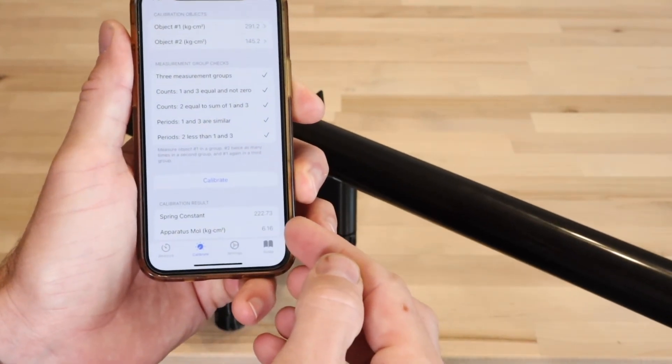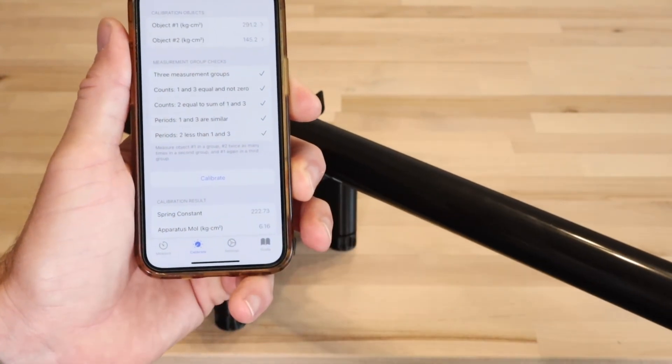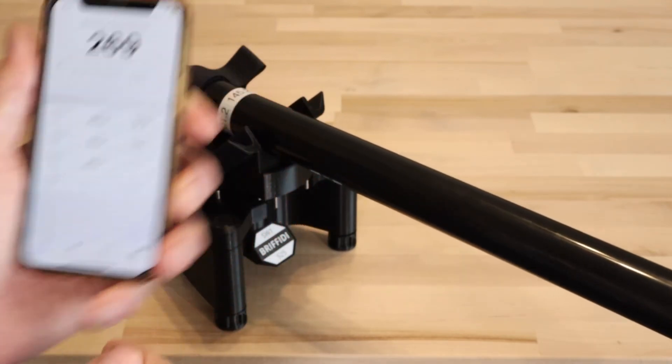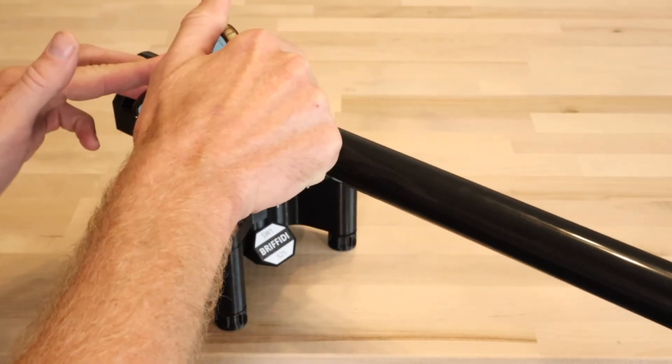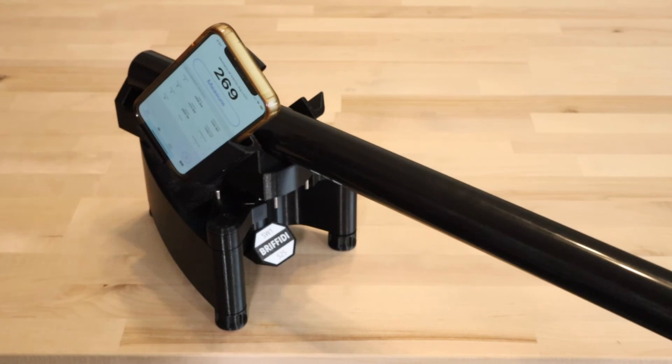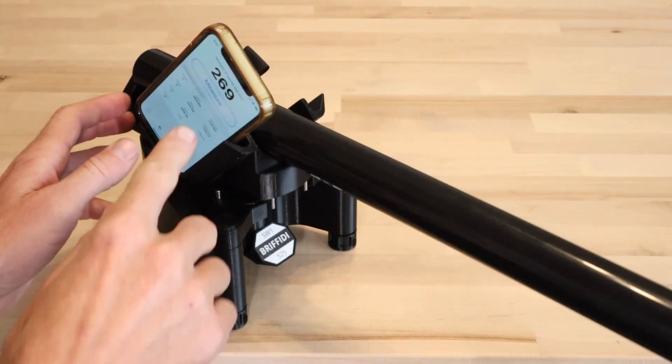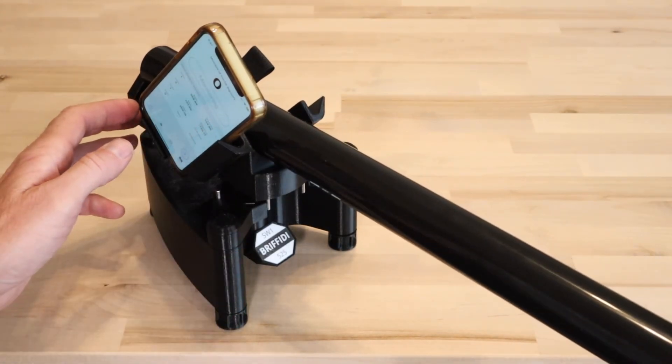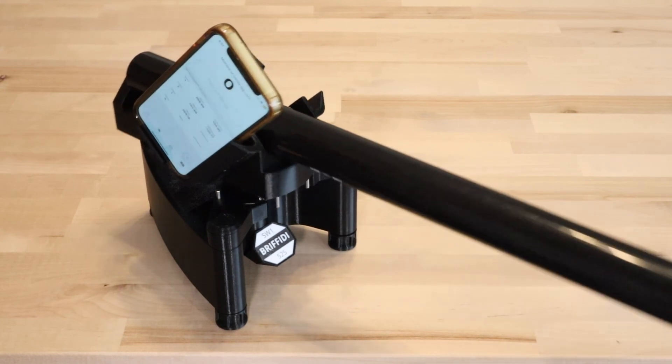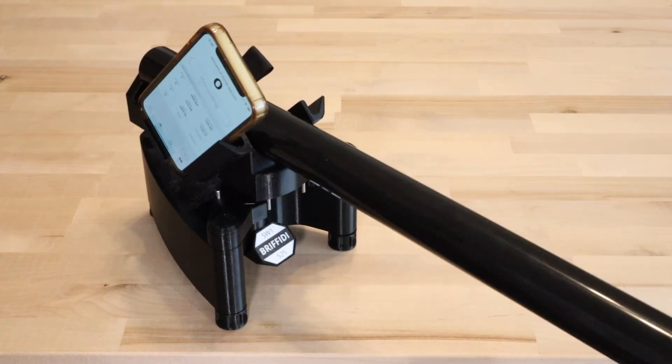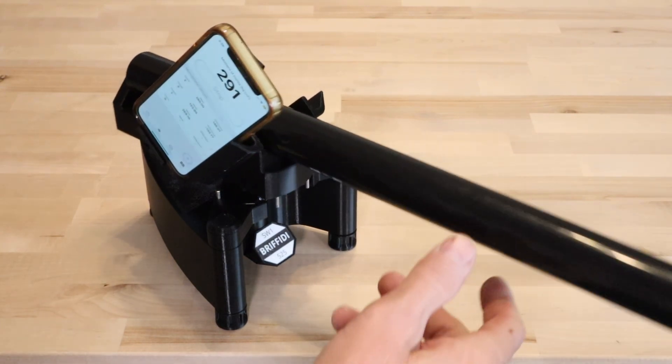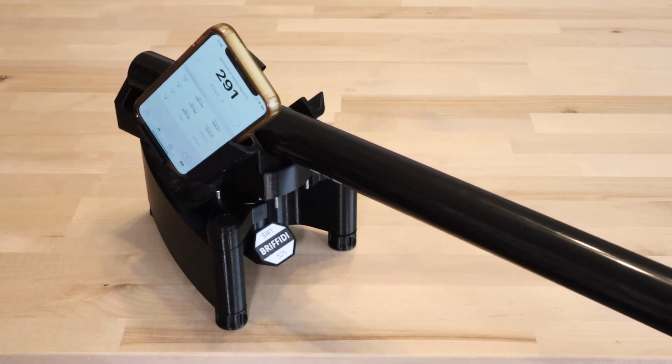The calibration result at the bottom of the screen will update. You should now be able to measure the calibration rod and match the values printed on the label. It was measuring 269, but now measures 291, which matches.